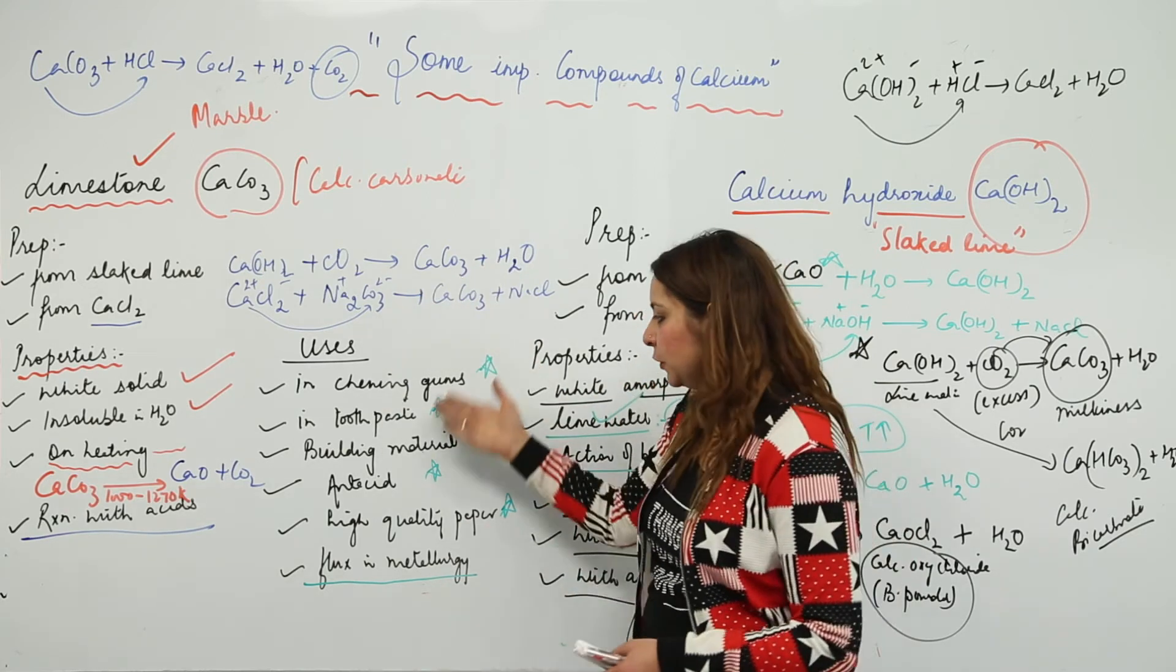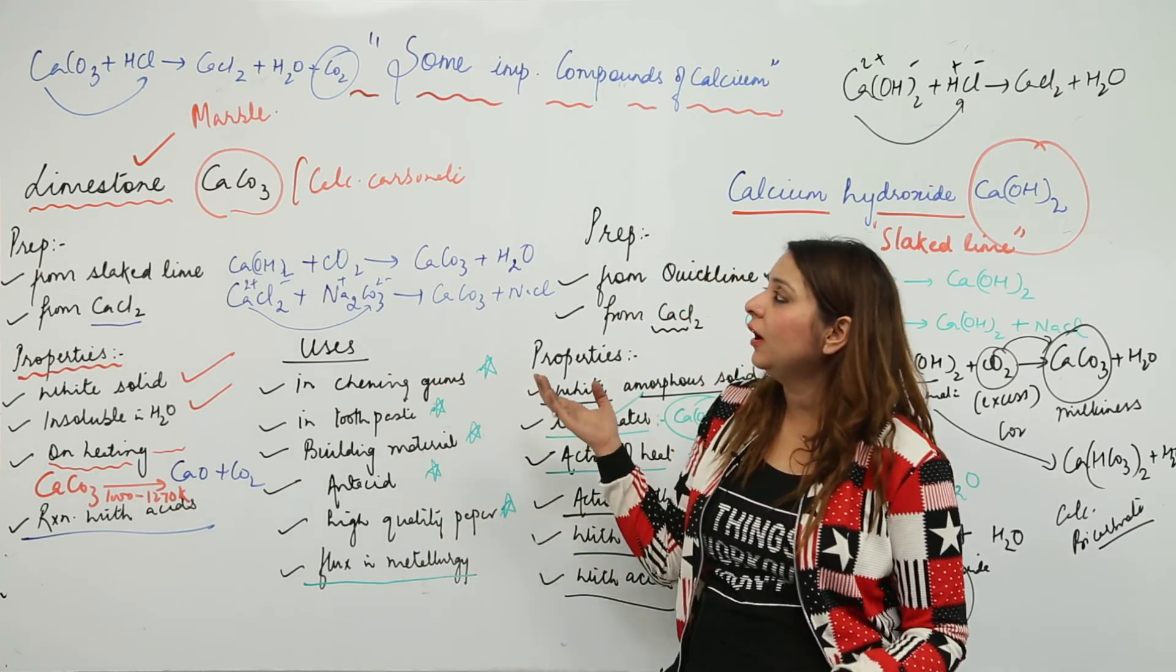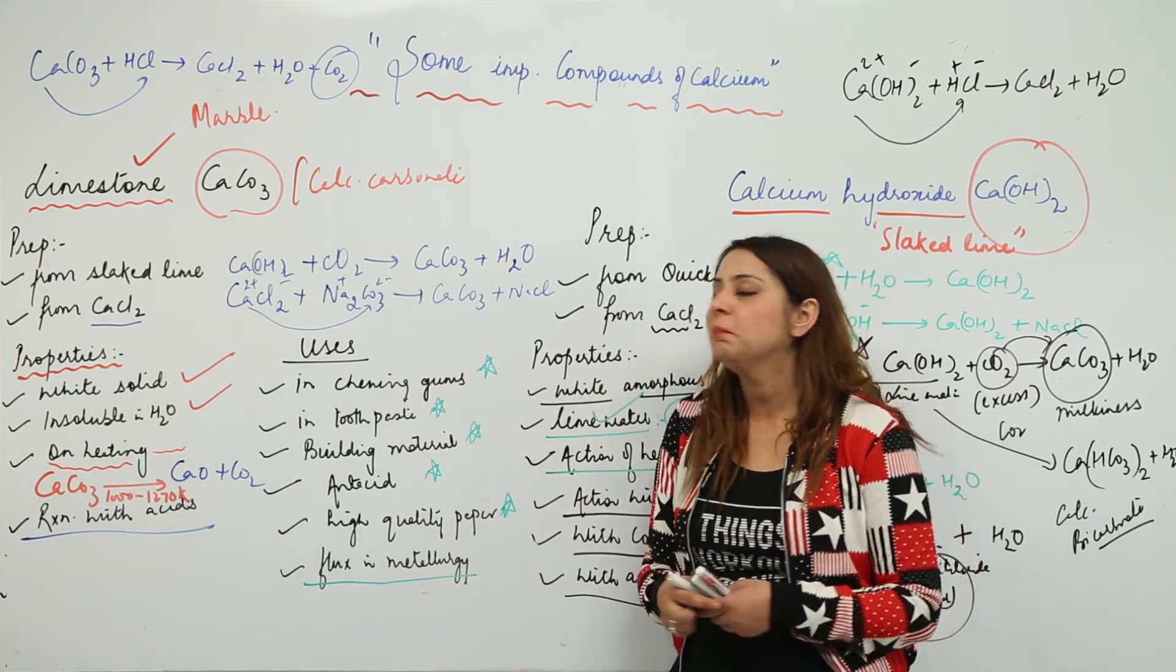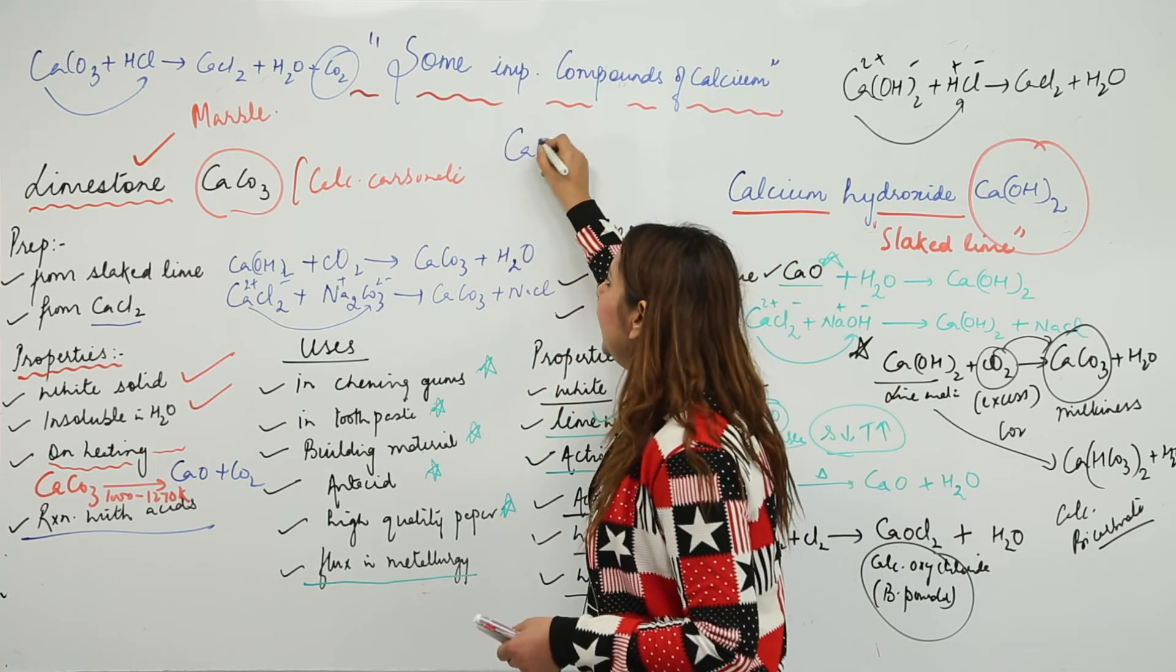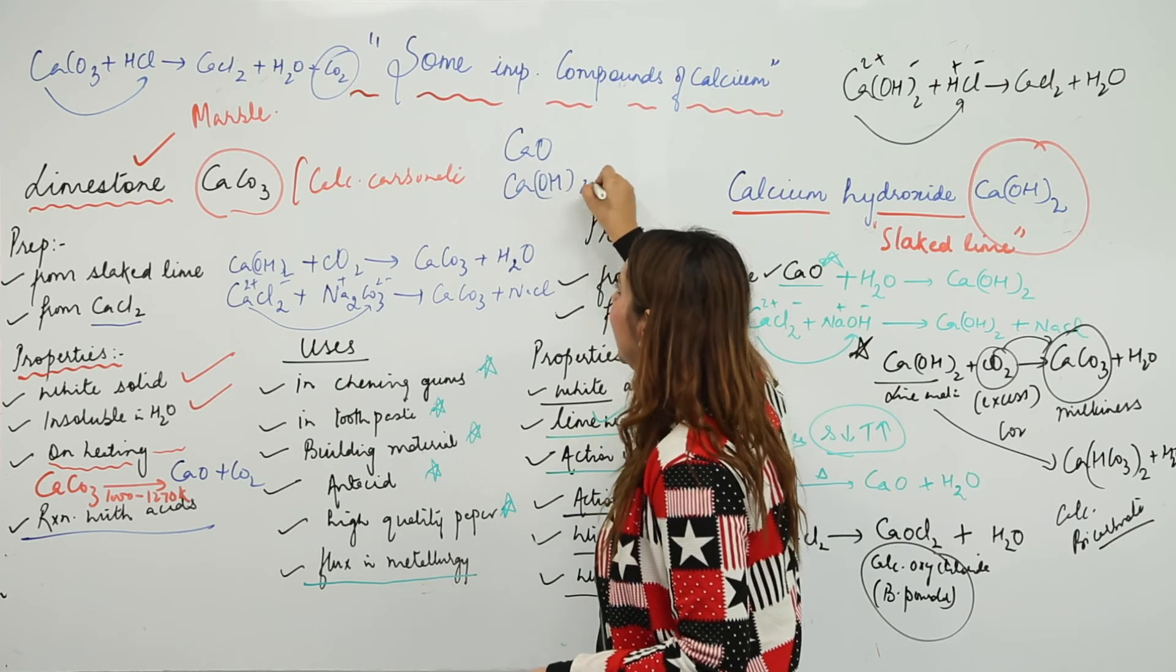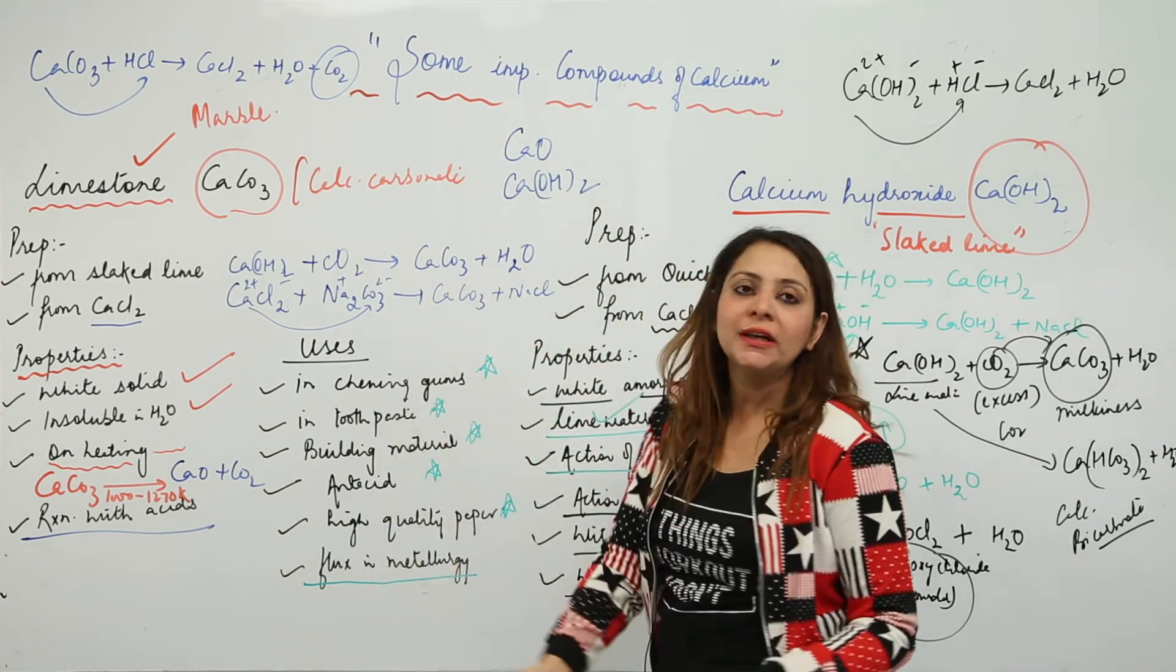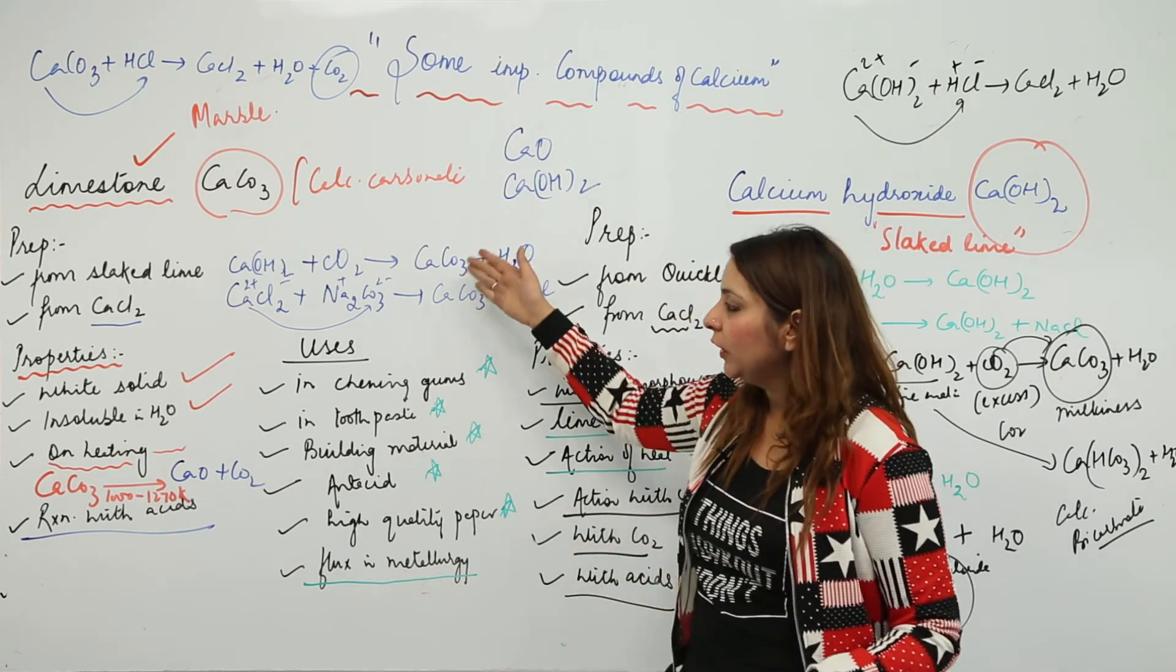So you have seen that we can actually make use of limestone in various purposes. Apart from that, you can also use it in making many other compounds, as you can form lime, and lime when mixed with water can form slake lime, and moreover you can form many other salts also.